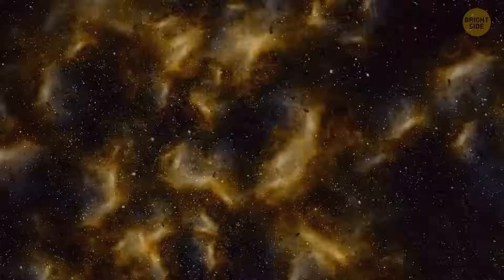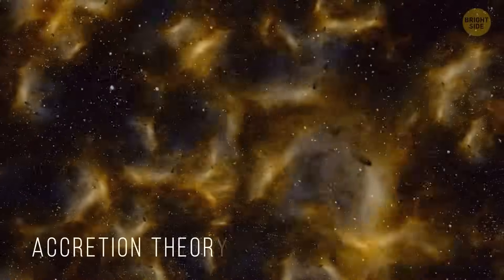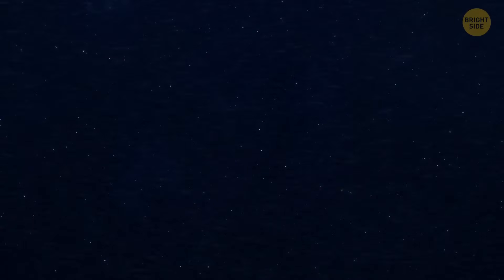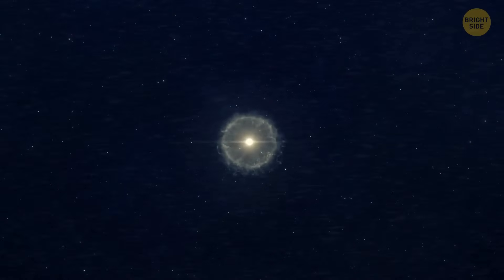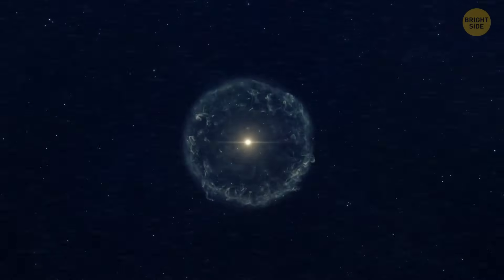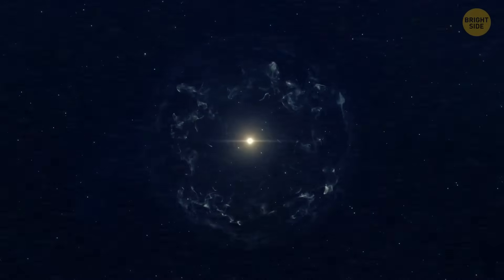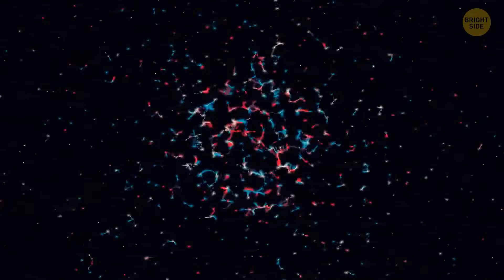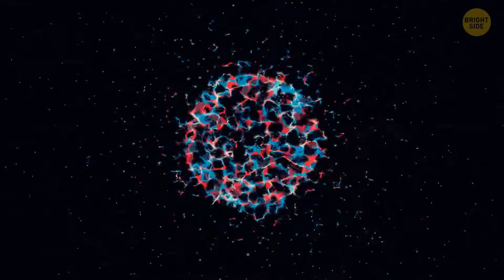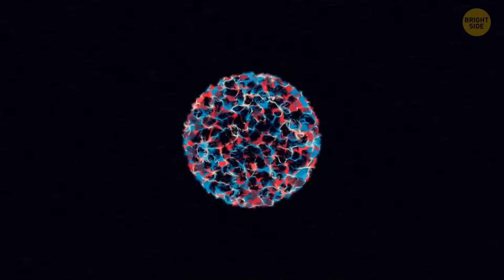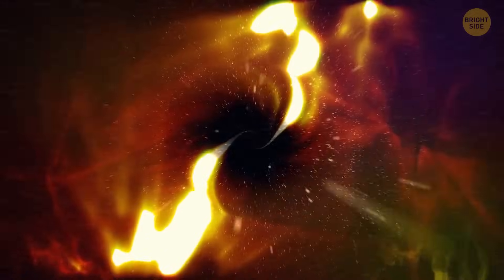The first step in the recipe for planetary formation is called the accretion theory. Let's say that something happens that causes gravitational instability, like a supernova goes off nearby or something. This pushes the gas and dust in the cloud and causes them to come together.